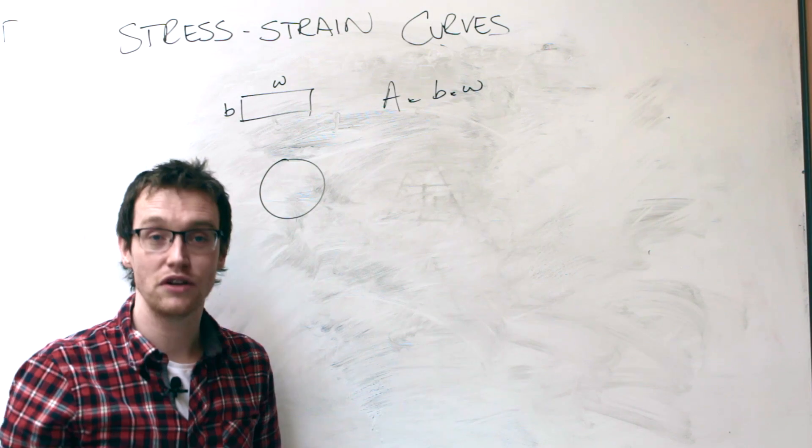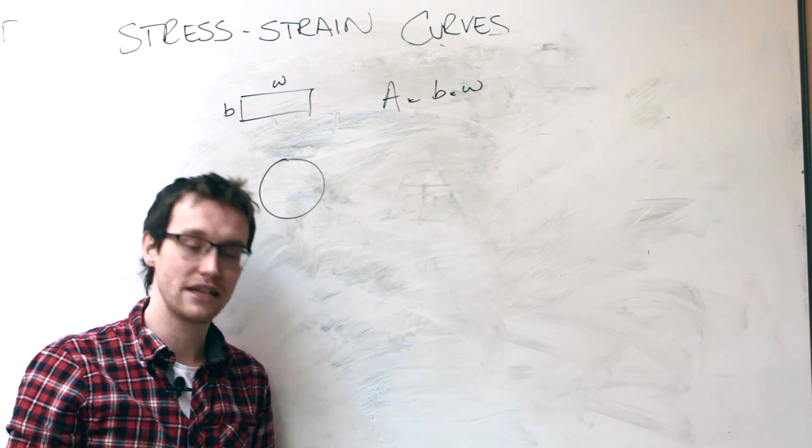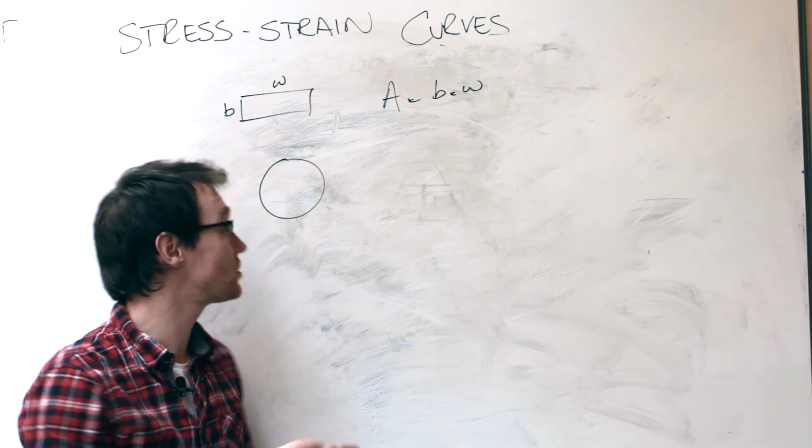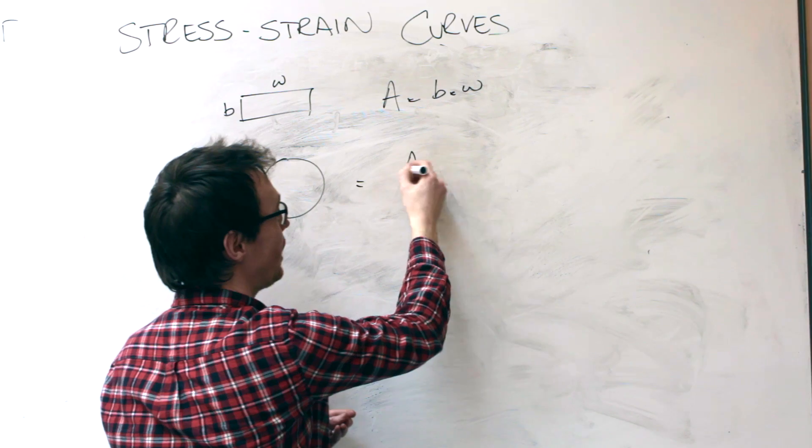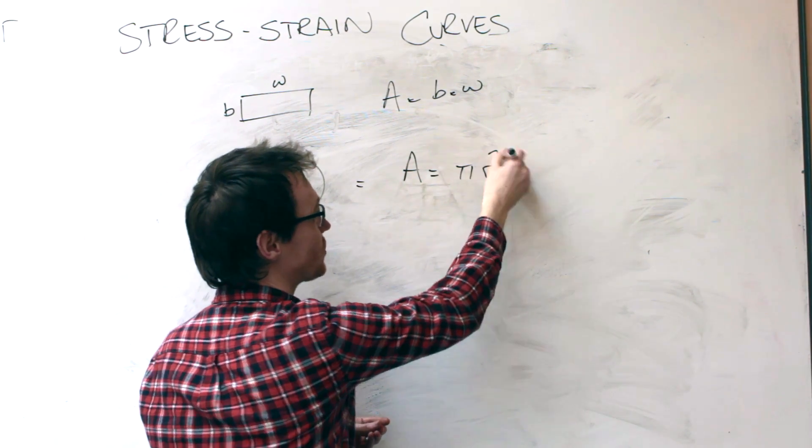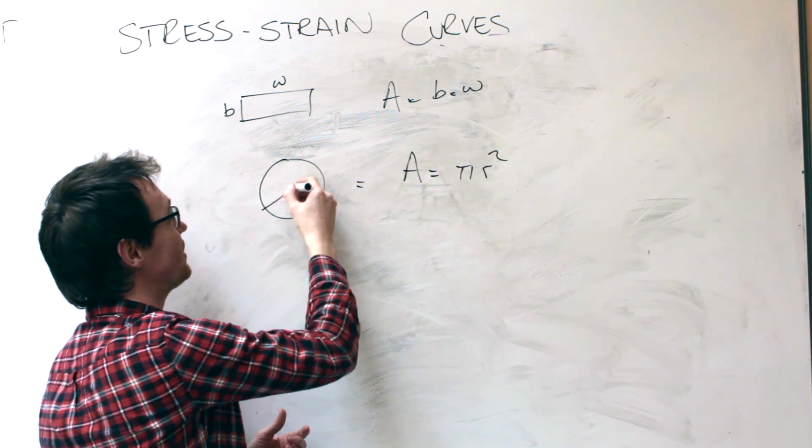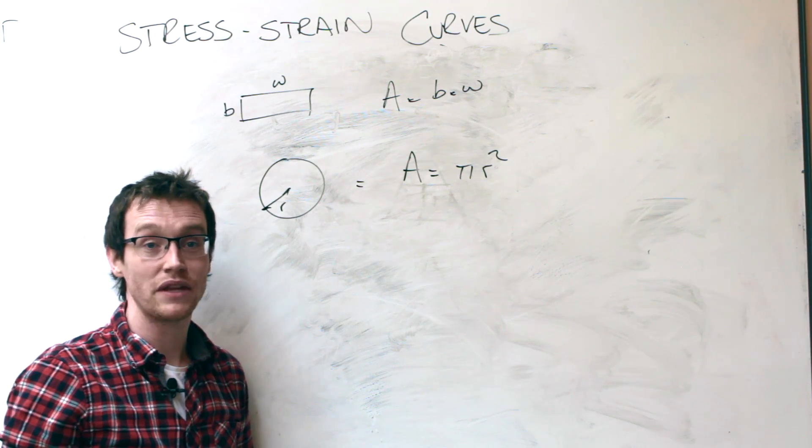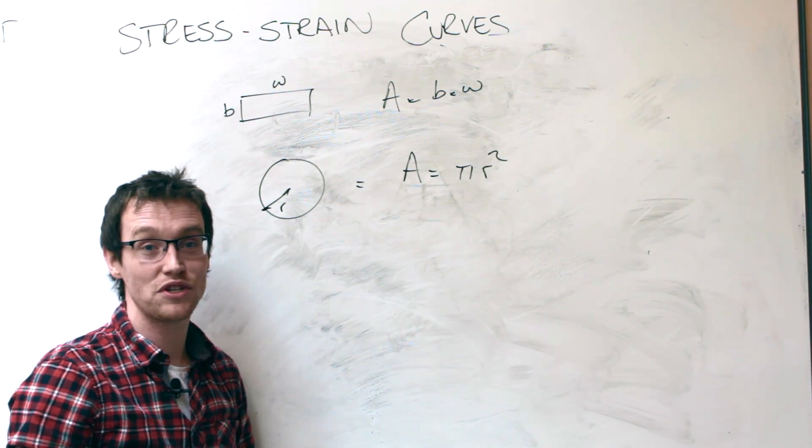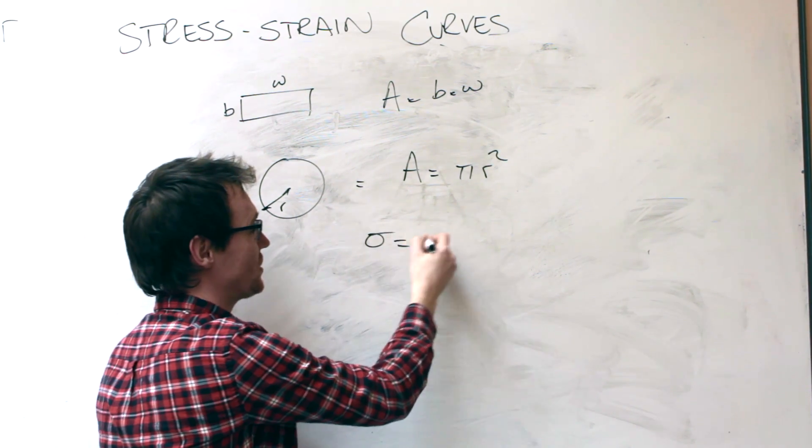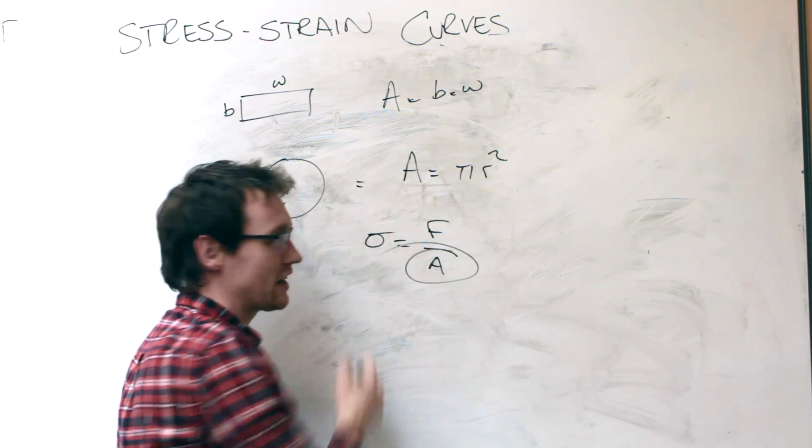Typically the other sections that you will come across in tensile testing, there's these little machined samples. So that's going to be given by area is equal to pi r squared, where r is the radius of the cross-sectional area. So just remember, use those two when you're doing your stress calculations for this section here.